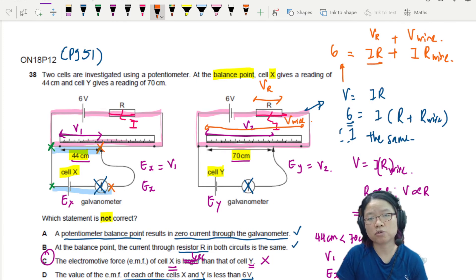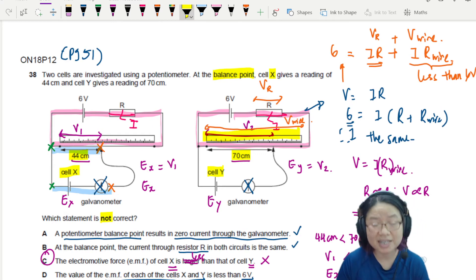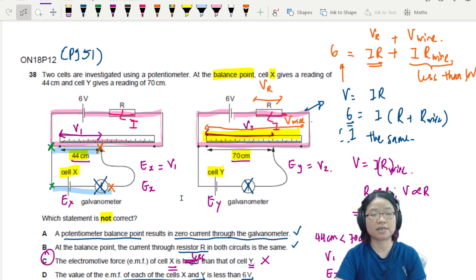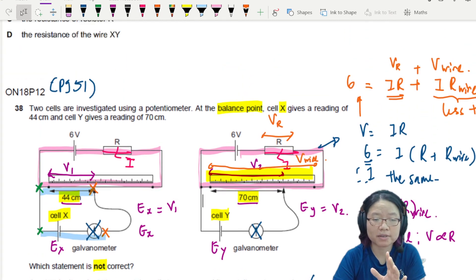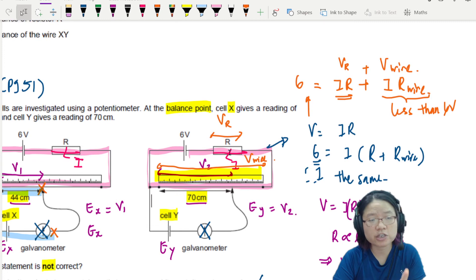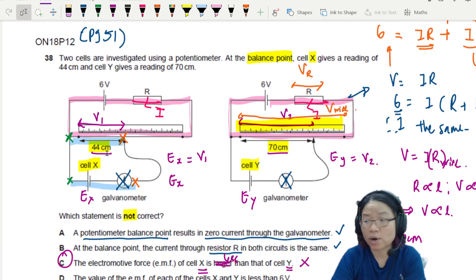So since 6 is this one, which is fixed, this thing is going to be less than 6V. If this is less than 6V, the whole wire from here to here is less than 6. Then 70 or 44 must be even lesser than 6. So I repeat, this 6V is going to be shared with the resistor and the wire. I don't know how they share, and it doesn't really matter what ratio they share it with. So this 6V is shared between R and the wire. If R is going to take some, the wire is less than 6. And you are not even taking the whole wire. You are only taking 70 cm of the wire or 44 cm of the wire. So the wire is less than 6. Part of the wire is less than 6. So definitely, it is less than 6V.